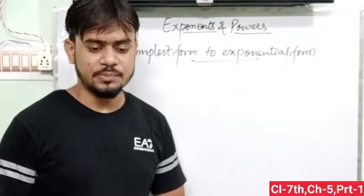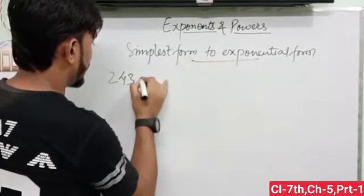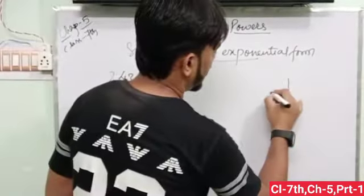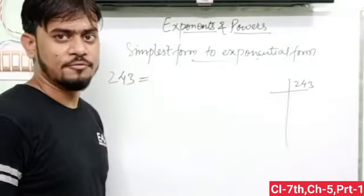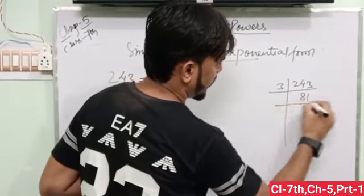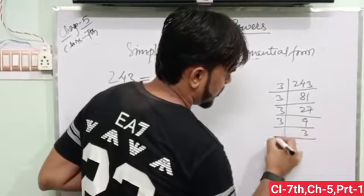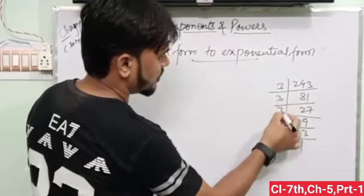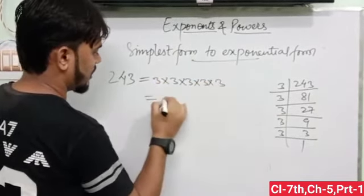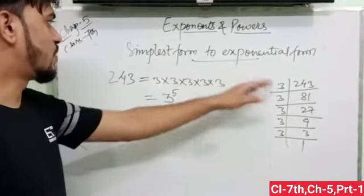Now, when I have a very simple number, just like 243, then we have to write exponential form. First of all, find out prime factorization of 243. This is divisible by 3, 81. Again, 3, 27, 3, 9, 3, 3, 3, 1. 1, 2, 3, 4, 5. 5 times 3. So we can write in exponential form, 3 raised to the power 5. This is the root. Change simplest form to exponential.